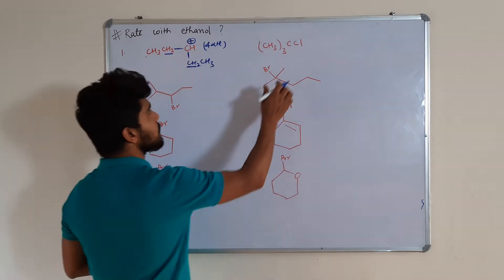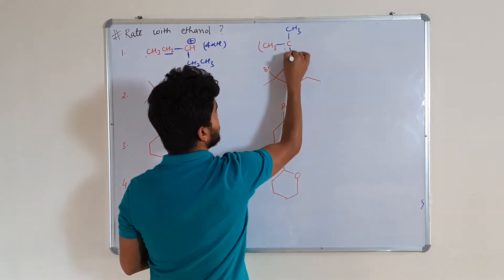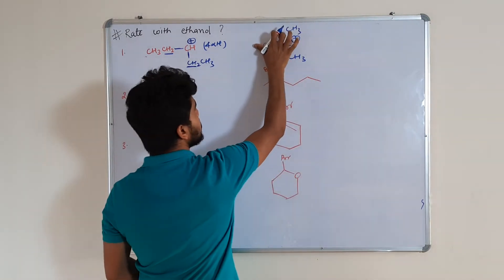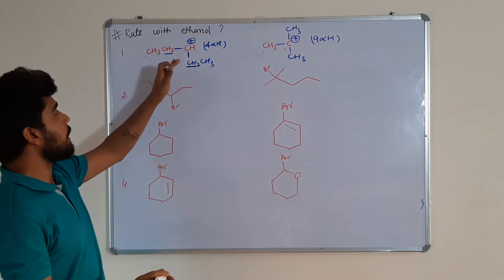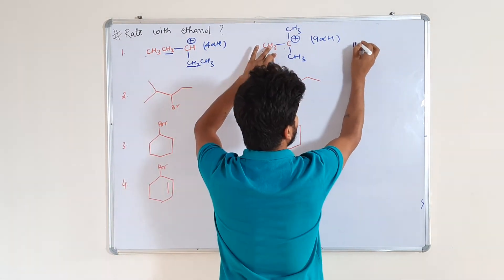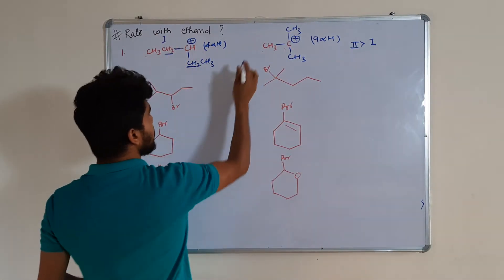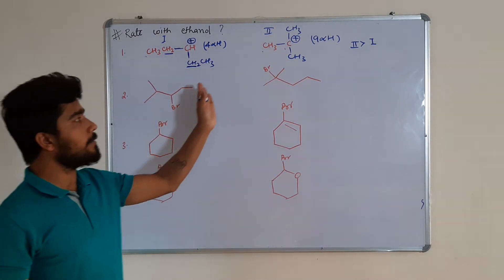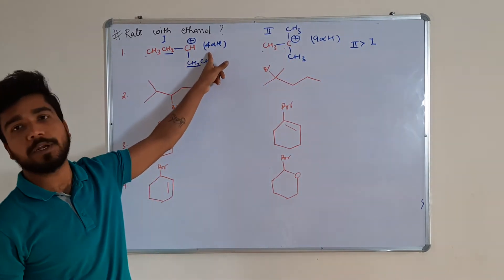Commonly hyperconjugation will give you the result. Now if we expand the second structure, it is a carbon with three CH3 groups, and once chlorine is removed, the carbocation will be formed at that position. So this carbocation has nine alpha hydrogen atoms, while this carbocation has only four alpha hydrogen atoms. So the second is more stable. Therefore, the second compound will give a faster rate than the first, because it has a more stable carbocation with more alpha hydrogen atoms.